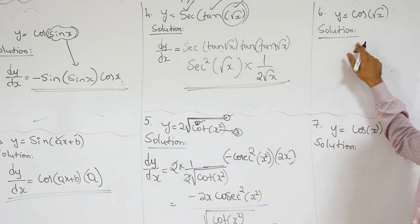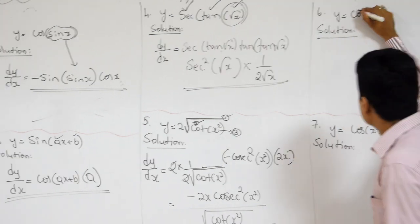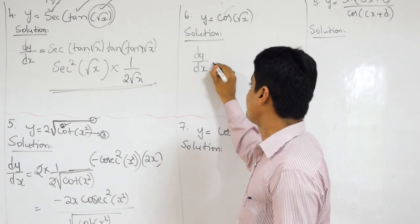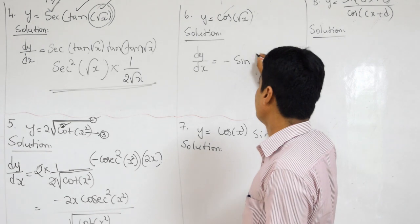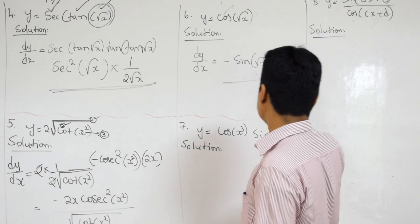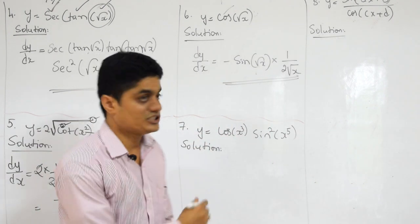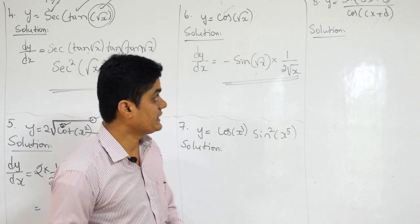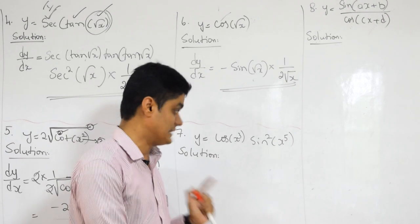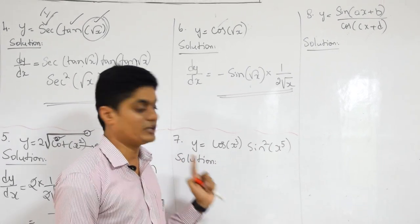Next — sixth one. How many functions are combined? Cos and root — just two functions. Which is the outermost function? Cos. What is the derivative of cos? Minus sine of root X into derivative of root X, which is equal to 1 by 2 root X. Already six problems solved. Now, whenever I write the answer to a question, you should be one step ahead of me — practice that, write the step in your workbook before I write.